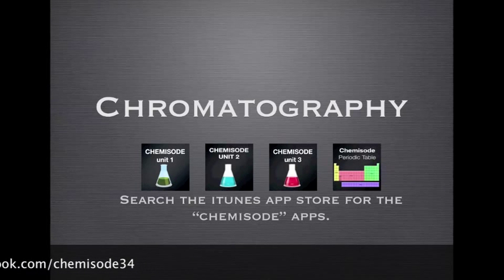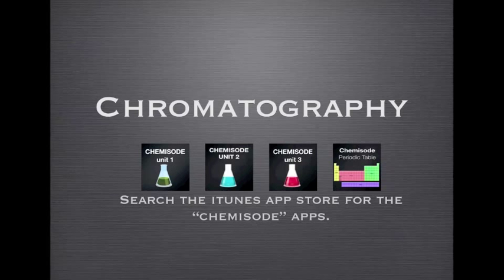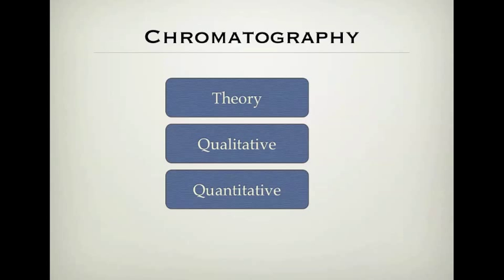Welcome back to Chemisode. This is the Chemisode for Chromatography, and it's the first of three parts where we look at different types of chromatography and how chromatography can be used to identify different substances. We're going to look at the theory and qualitative analysis, and then a separate one for quantitative use. The qualitative and theory portion is split into two parts: paper and TLC chromatography, and HPLC and gas chromatography.